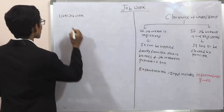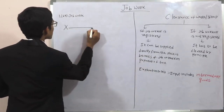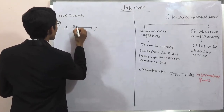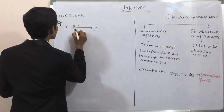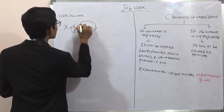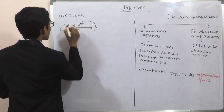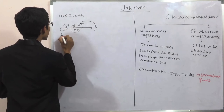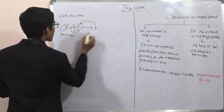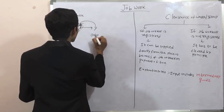For example, X is transferring some goods — such as raw materials or packing materials — to Y. And Y is undertaking some process on these goods belonging to X. Then X will be called the principal and Y will be called the job worker.